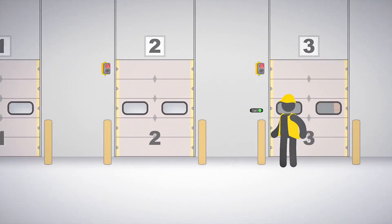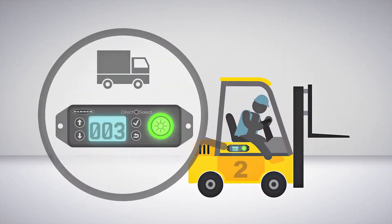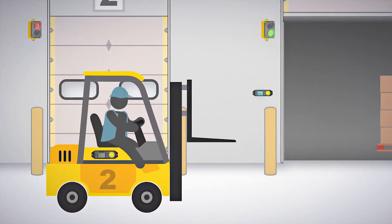DirectSelect nodes make ideal communication devices between dock bay doors and forklifts. Send and receive requests and responses between team members without workers ever leaving their stations.